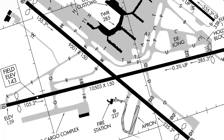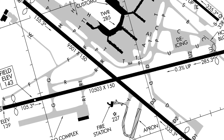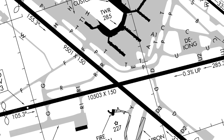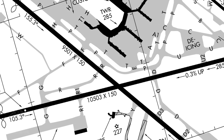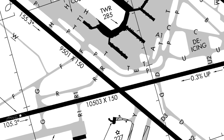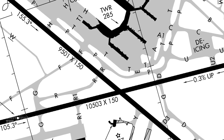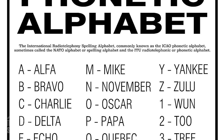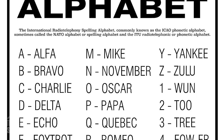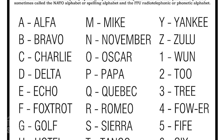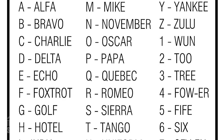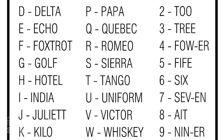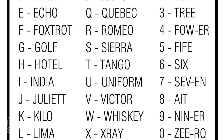Now that you have the chart in hand, you'll notice that the taxiways are marked with letters. In order to communicate with ATC you're going to need to learn the phonetic alphabet — not only to identify your aircraft but also to understand and repeat taxi instructions to the controller. I'll link to a good phonetic chart in the description for you to study.